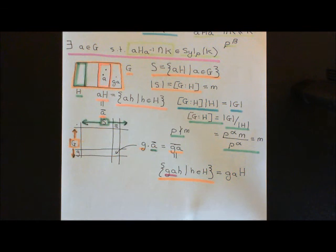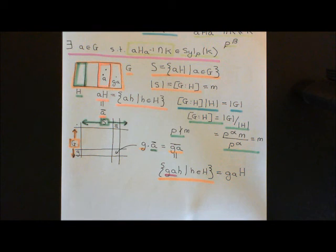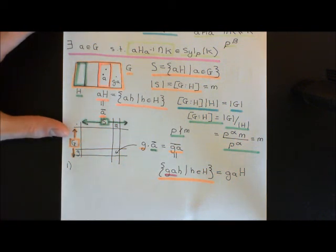They will be left cosets of this subgroup H. So I now need to quickly prove that this group action composition law actually obeys the axioms of being a group action, then we'll discuss the orbits and stabilisers, and use this to prove the second Sylow theorem. Let's make sure it obeys the axioms.